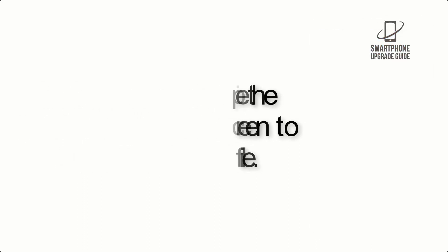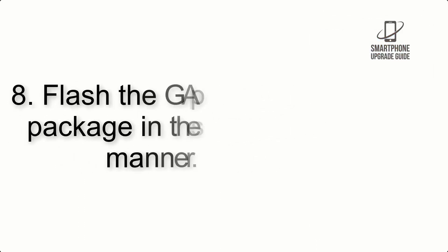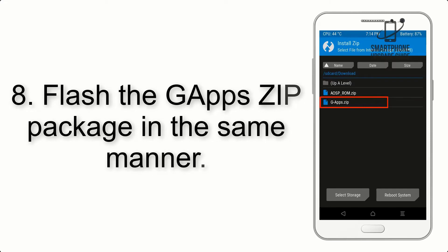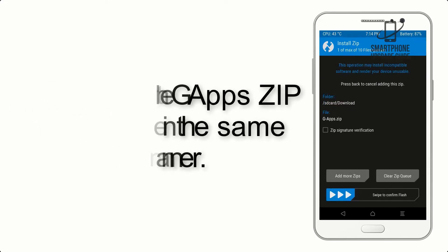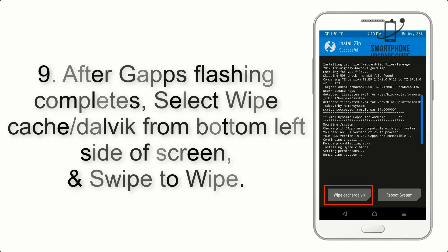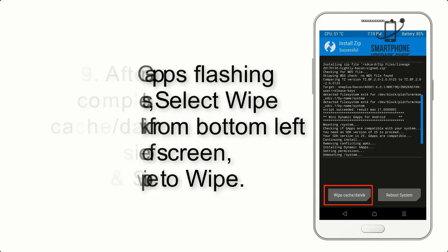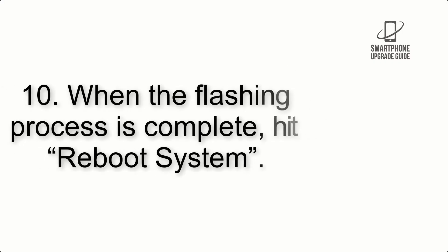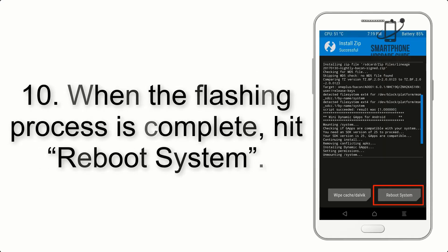Step 7: Swipe the button on the screen to install the ROM file. Step 8: Flash the GApps zip package in the same manner. Step 9: After GApps flashing completes, select Wipe Cache and Dalvik from the bottom left side of the screen and swipe to wipe.